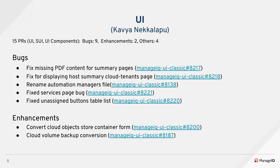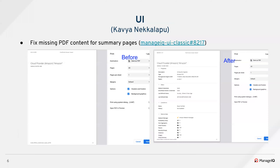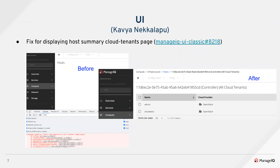Thanks, Oleg. In this sprint, a total of 15 PRs got merged into UI repos — nine bugs, two enhancements, and so on. For summary pages, the download PDF functionality was broken, and that bug was fixed. When cloud tenants are opened from the host summary page it was also broken — Jeffrey fixed that bug in this PR.